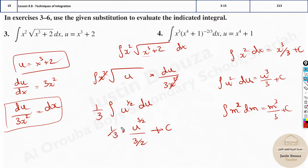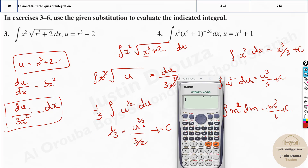If you're getting confused with the fractions, just put it in the calculator: 1/3 multiplied by 1, divided by 3/2. Let me show you — type 1/3, multiply by 1 (for the numerator variable), then divide by 3/2.